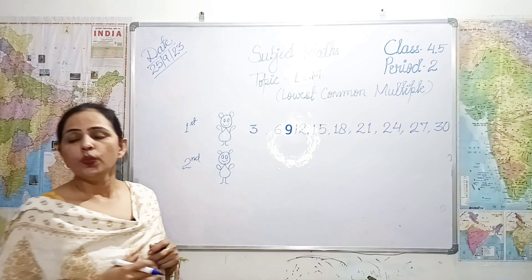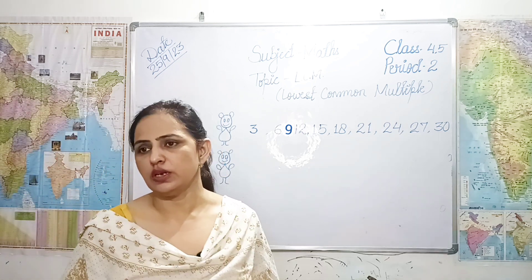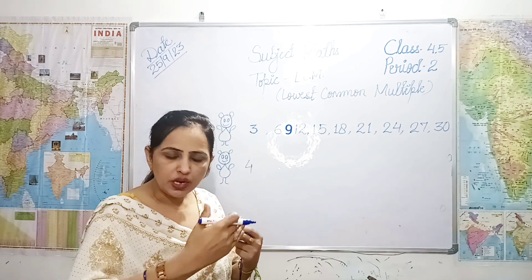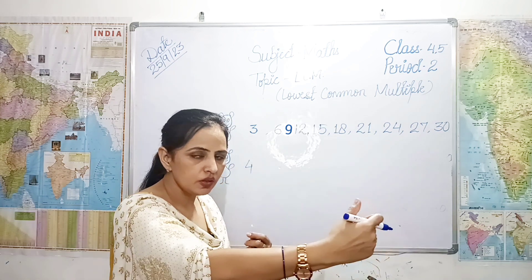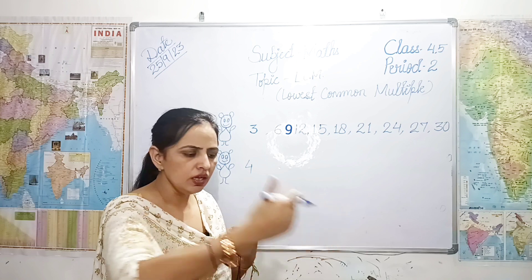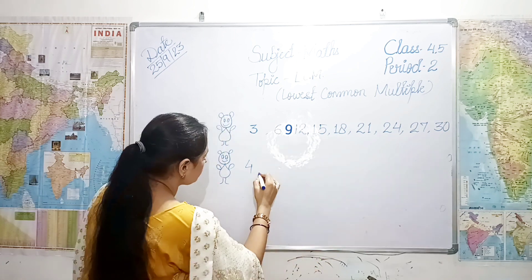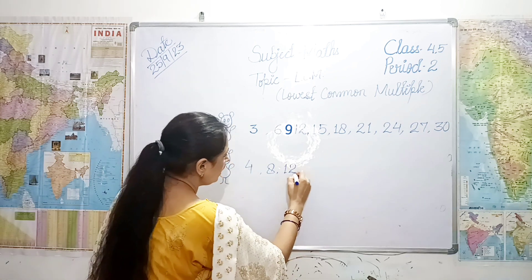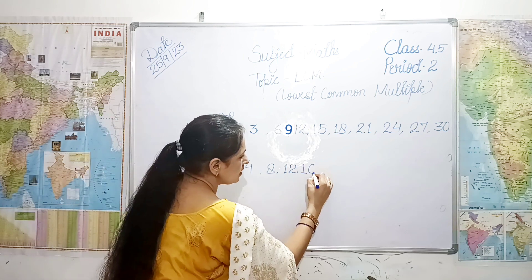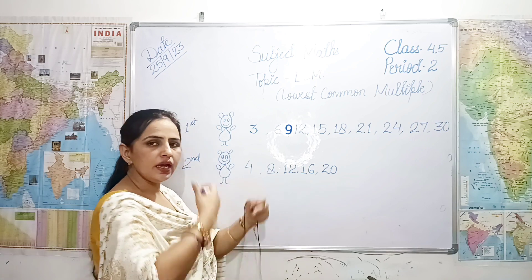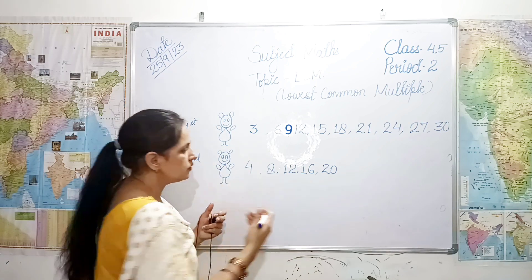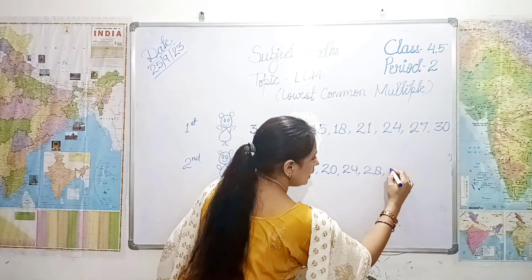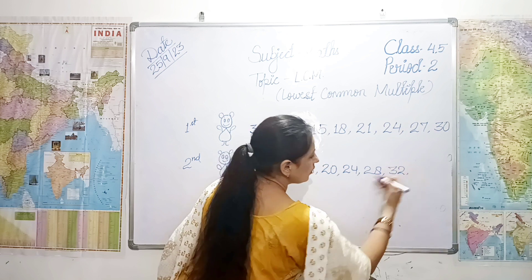Aage jo second rabbit tha — first time may woh four jumps kare. How many jumps? Four jumps. One, two, three, four. Second time may kitnay ho jayenge? Eight. Third time: twelve. Fourth time: sixteen. Then twenty, twenty-four, twenty-eight, thirty-two, thirty-six, forty.